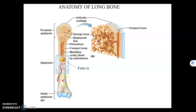Lining the bone on the outside — which we see getting peeled off here — is the periosteum. Lining the inside of bone, which means lining the medullary cavity and lining the spongy bone, we have endosteum, which is not labeled here.